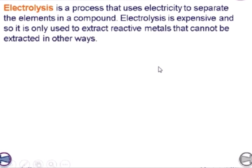Electrolysis is a process that uses electricity to separate the element in a compound. Electrolysis is expensive and so it is only used to extract metals that cannot be extracted in other ways. It is a very expensive process and we use it only when we get a profit, and when we cannot take the metal out from the ore by any other method, we do electrolysis.